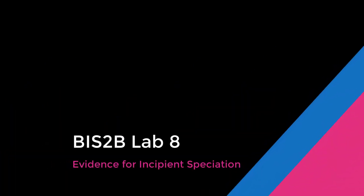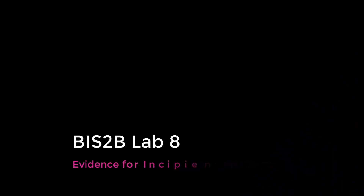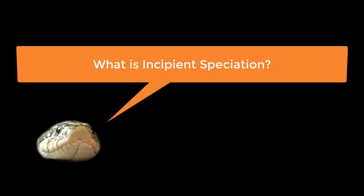Hello Biz2B students. Welcome to Lab 8: Evidence for Incipient Speciation. What is incipient speciation? Incipient simply means the beginning of something, and speciation is the process in which species are formed. So today we're looking at the beginning of the process of speciation.